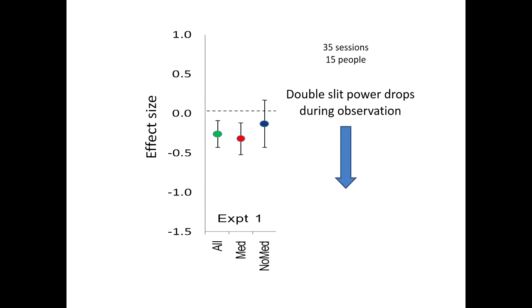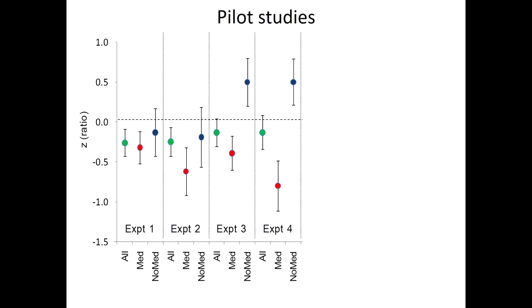So when we do experiments of this type, especially when they work the first time, we're always suspicious about the first-timers effect or everybody's very enthusiastic about what's going on. So we repeat it again and again. So we did four pilot studies, each time adjusting things in various ways and looking at different kinds of aspects of the design. And in each case, each one of the four pilot studies, the meditators did quite well. If you just combine everybody, the green dots are the overall result. And in some of the experiments, the non-meditators did not do very well. They tend to mind wander pretty quickly.